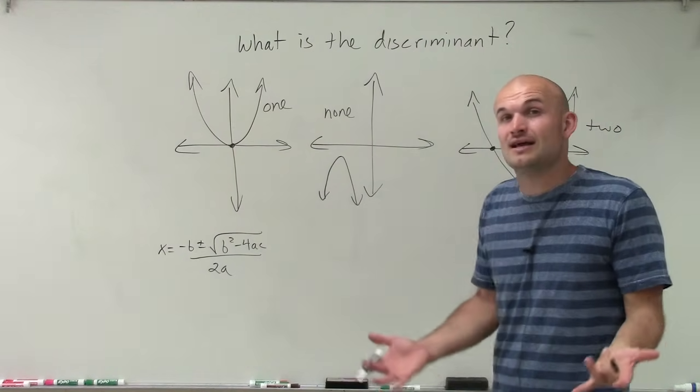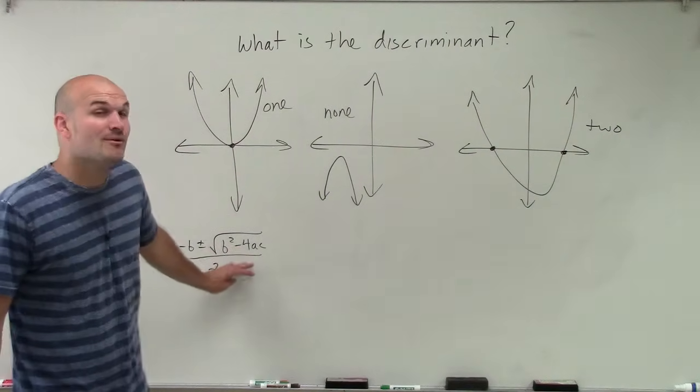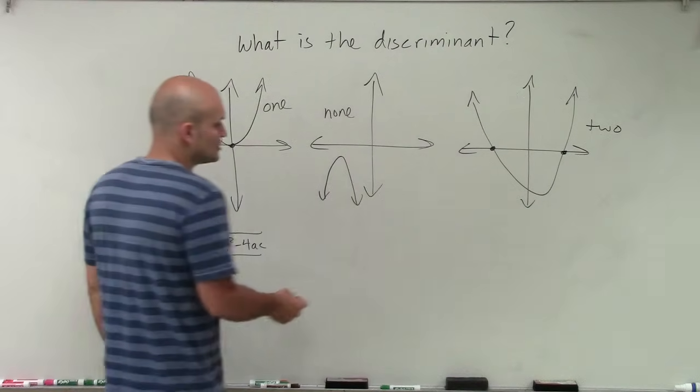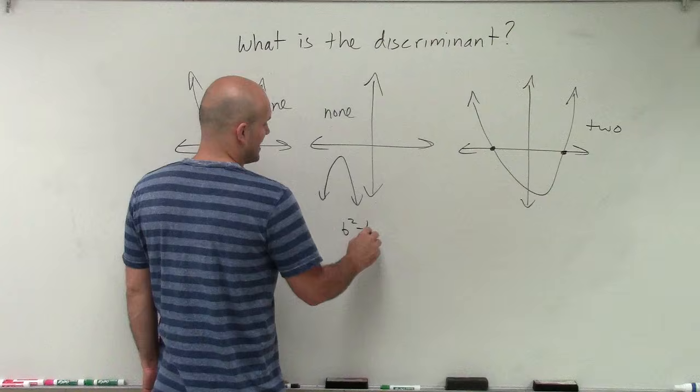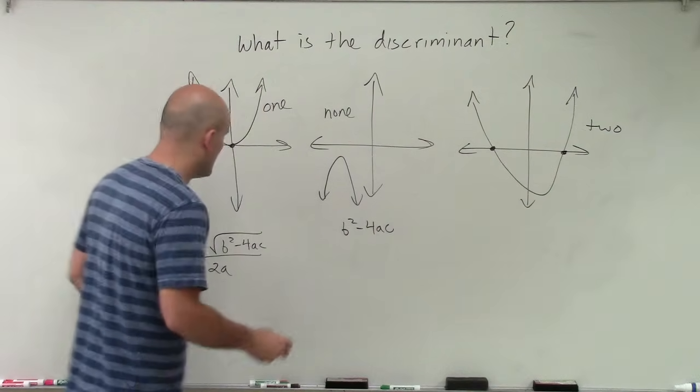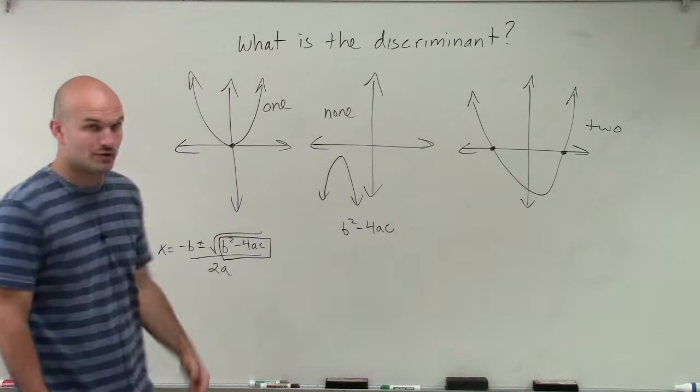And a lot of times we'll say, what type of solution does the graph have, where we don't even have to go through the whole formula. We can just be able to determine the discriminant. So the discriminant is very simple. All it means is b squared minus 4 times a times c.